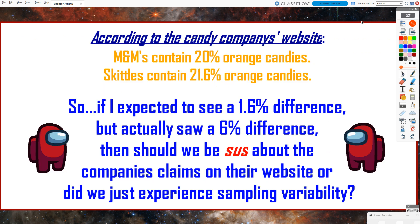According to each company's website, M&Ms supposedly contain 20% orange candies — and they have percentages for all the other colors as well, but we're going to focus just on orange. Skittles supposedly contain 21.6% orange candies. So according to the company's websites, based on their population data, Skittles should contain a slightly higher percentage of orange candies than M&Ms.